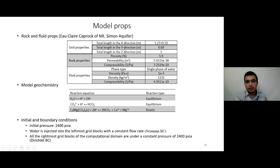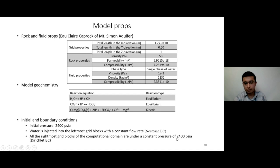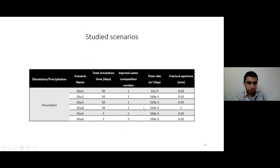I used the rock and fluid properties of the Eau Claire formation and considered specific chemical reactions. The initial pressure is 2,400 PSIA. Water is injected from the leftmost grid blocks with a constant flow rate and produced from the rightmost grid blocks with a constant pressure of 2,400 PSIA. Different scenarios were considered: different compositions for the injected water, different injection flow rates, and different fracture apertures, to investigate their effects.